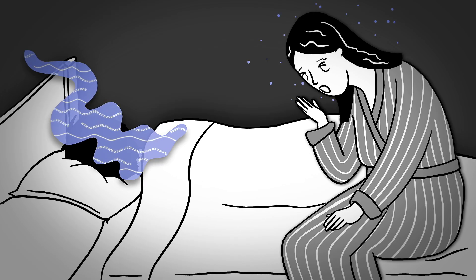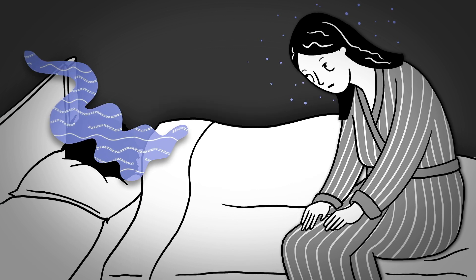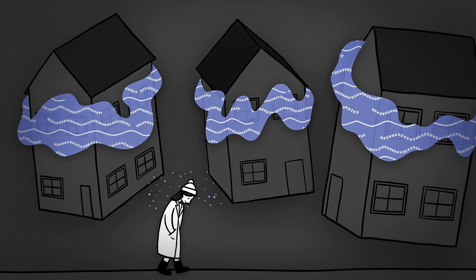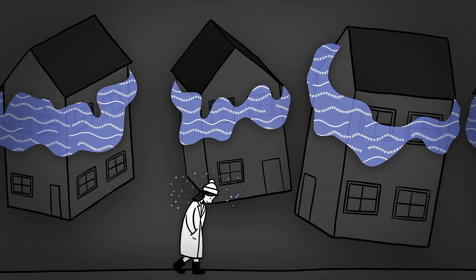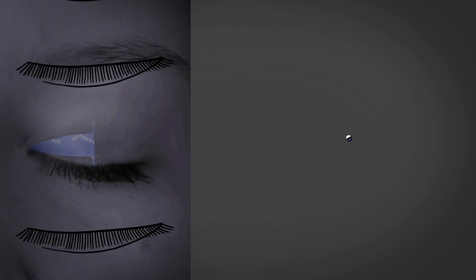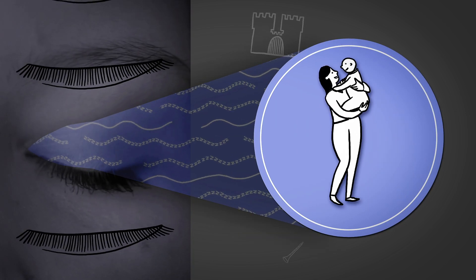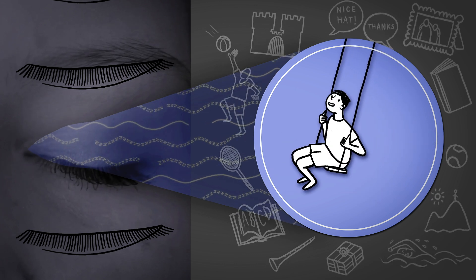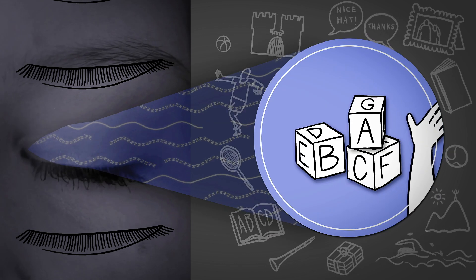Some autistic people have trouble falling asleep, taking an average of 11 minutes longer than a neurotypical person does. Others wake periodically throughout the night or rise hours earlier than anyone else. Many people with autism also spend less time in the rapid eye movement, or REM, sleep stage, which is crucial for learning and consolidating memories.